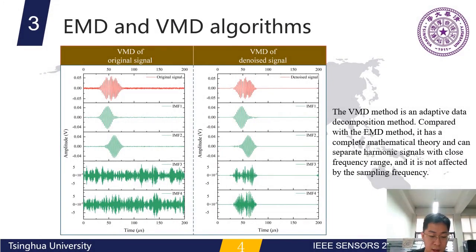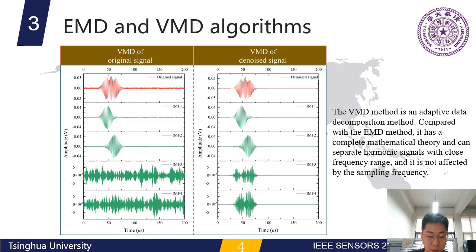The VMD method transfers the signal decomposition process to a variational framework, introduces the Lagrange function to remove the constraints, and then uses the ADMM method to obtain the optimal solution to achieve the full intrinsic mode signal decomposition.